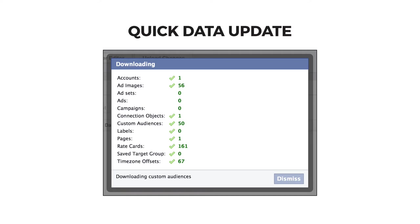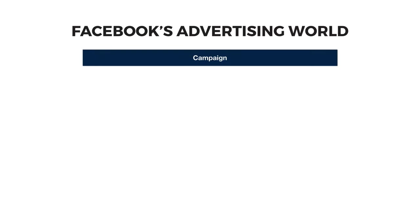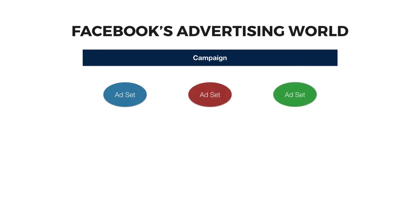Once everything has a green check by it, you're ready for the fun to begin. It's important for you to understand how the Facebook advertising world is laid out. Facebook organizes your advertising efforts into campaigns. You can run as many campaigns as you want to, but I recommend that you start with one at a time so it's easier to manage while you're ramping things up. Campaigns are then comprised of ad sets, which is the level at which you target specific audiences. You can have multiple ad sets in a campaign — I recommend you start with three to five ad sets.